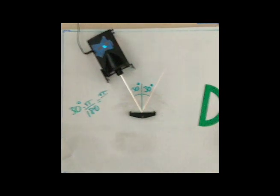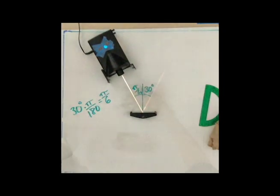When the incident angle is changed to 30 degrees from the normal, the reflected angle is also 30 degrees from the normal, or pi over 6 radians.